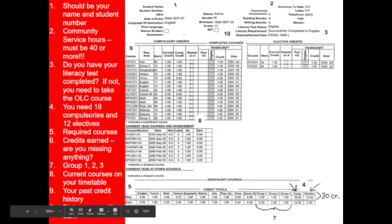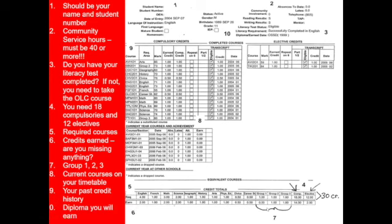Let's take a look over here — these are the requirements for the compulsory credits. So four English, one French, three math, et cetera. You can see this student has earned two English and two math, so they're missing two English and one math. As we scan over, the other thing they're missing is Group One. So you can see what is missing on yours.